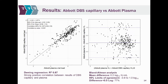This slide shows the correlation between DBS capillary and plasma. There is a strong linear correlation between both samples. The Bland-Altman plot on the right shows the difference between DBS and plasma, with a mean difference of 0.2 log — meaning plasma was approximately 0.2 log higher than DBS.